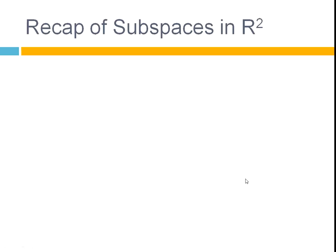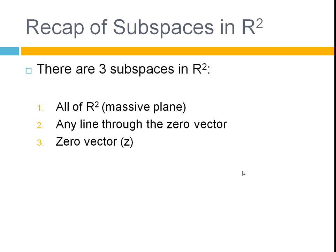So, we'll just recap the subspaces we've looked at. And you can remember in R2 there are three subspaces. All of R2, just the entire vector space, the massive plane, that's a subspace. Any line that goes through the zero vector must include the zero vector. That's a subspace. And the zero vector on its own is a subspace. Zero vector is often denoted by this letter Z.